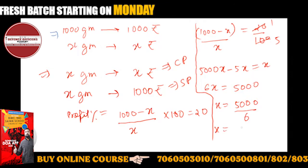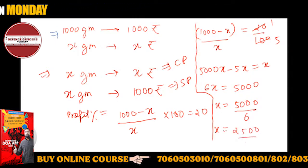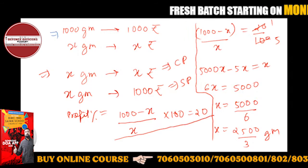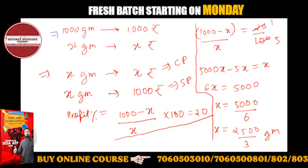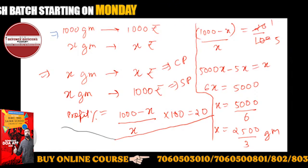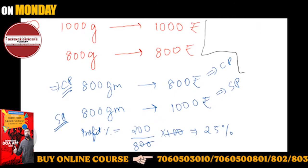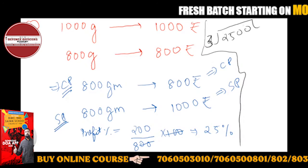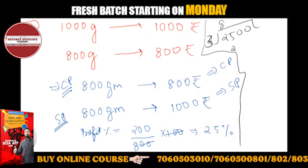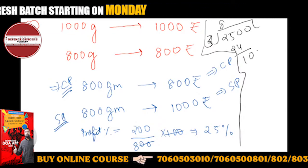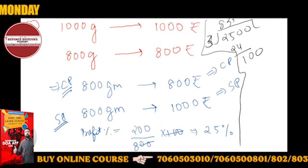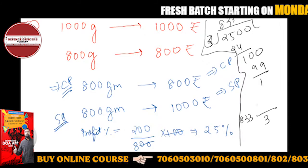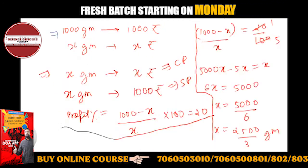So 6x = 5000, which gives x = 5000/6. Dividing by 2: x = 2500/3 grams. To convert to mixed fraction: 3 goes into 2500 — 3 × 833 = 2499, remainder 1. So in mixed fraction it comes to 833⅓ grams.